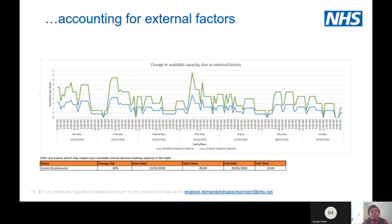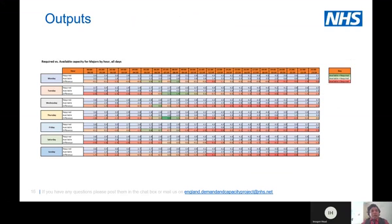So we've forecasted future demand, configured the capacity, and accounted for external factors. Let's now look at the outputs of the model. The first output is a heat map which, at a glance, shows the situation of your entire department for the next week. It allows you to see where there may or may not be a mismatch between required capacity and available capacity. If it's green, you have enough capacity at a given time on a given day; if it's red, there's a mismatch, and the intensity of the red indicates the degree of that mismatch.